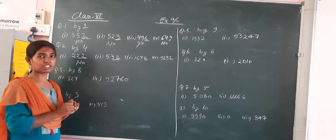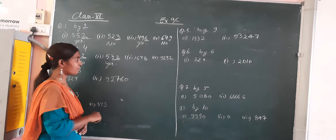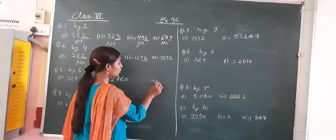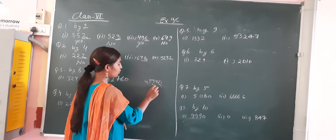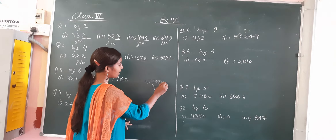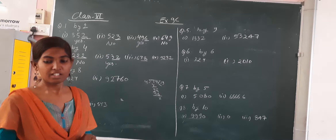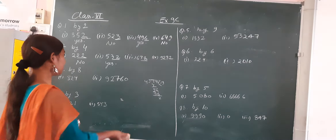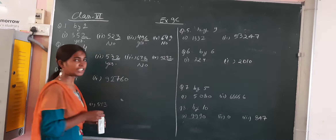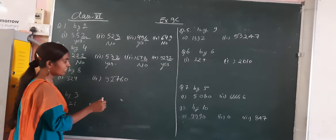Here, last 2 digits are 32. 32 is divisible by 4. So yes, this number is divisible by 4. Here, last 2 digits are 78. Check whether 78 is divisible by 4 or not. 4 times 19 is 76, 2 is left. So it is not divisible — we write no. Now here, last 2 digits are 32. 32 is divisible by 4, so yes, it is also divisible by 4.